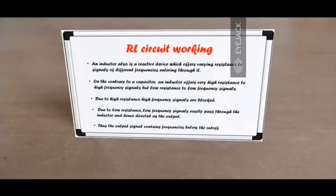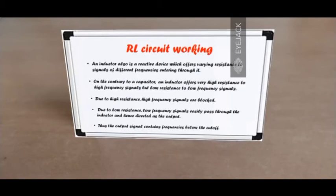When high frequency signals try to enter through the inductor, they are simply blocked because the resistance is too high. On the contrary, for low frequency signals the resistance is very minimal and they easily pass through it, becoming the output. So the high frequency signals aren't able to enter the inductor — they are blocked — and the output is devoid of high frequencies and rich in low frequencies, which is what is accomplished using a low-pass filter.